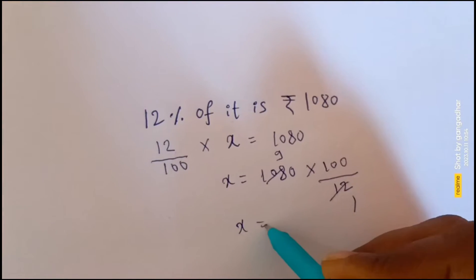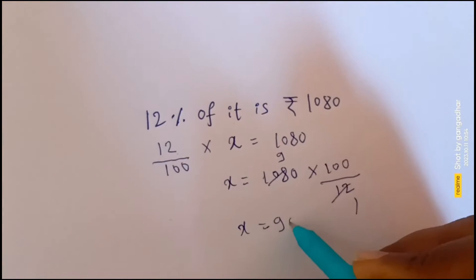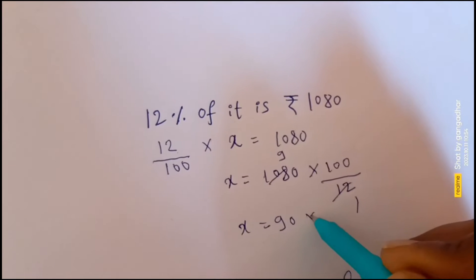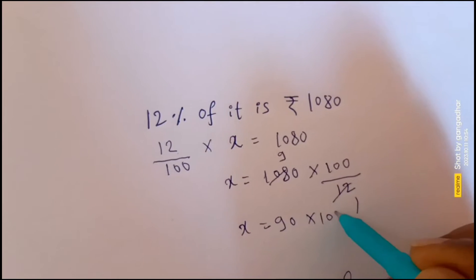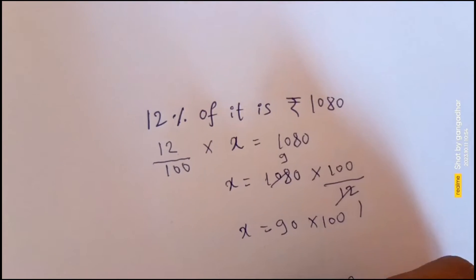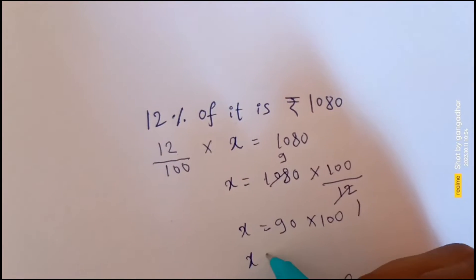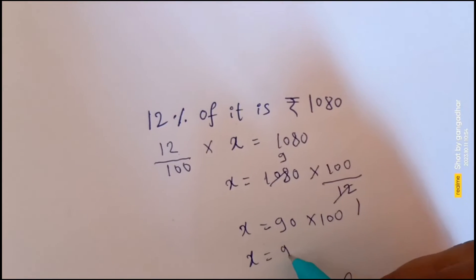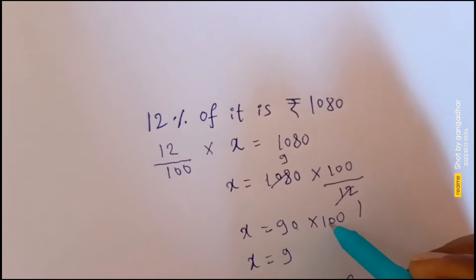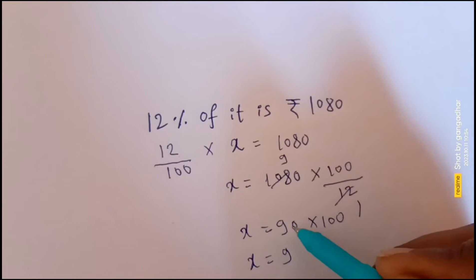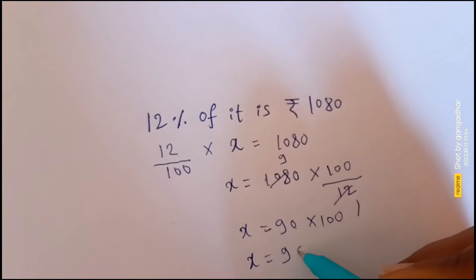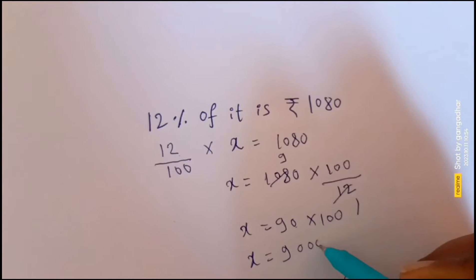x is equal to 90 into 100. You have 3 zeros — 9 ones are 9, with 3 zeros — x is equal to 9000.